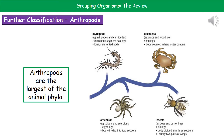Within the animal kingdom, the phylum of arthropods is actually the largest of all the animal phyla. Looking within the arthropods, there are further divisions. The myriapods include millipedes and centipedes, with legs on each body segment and a long segmented body. The crustacea include crabs and woodlice, with ten legs and a hard outer coating. The insects, like bees and butterflies, have six legs, bodies divided into three sections, and usually two pairs of wings. Finally, the arachnids — spiders and scorpions — have eight legs and bodies divided into two sections.